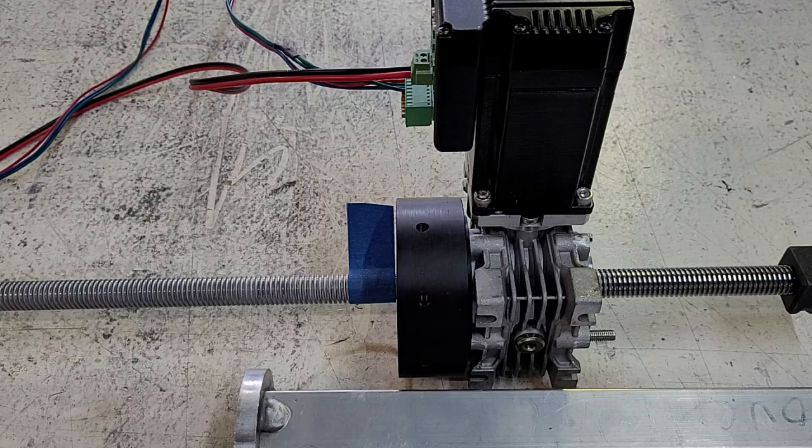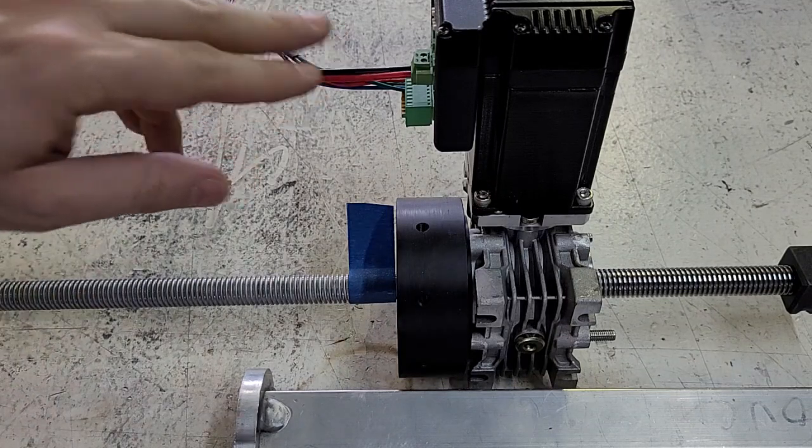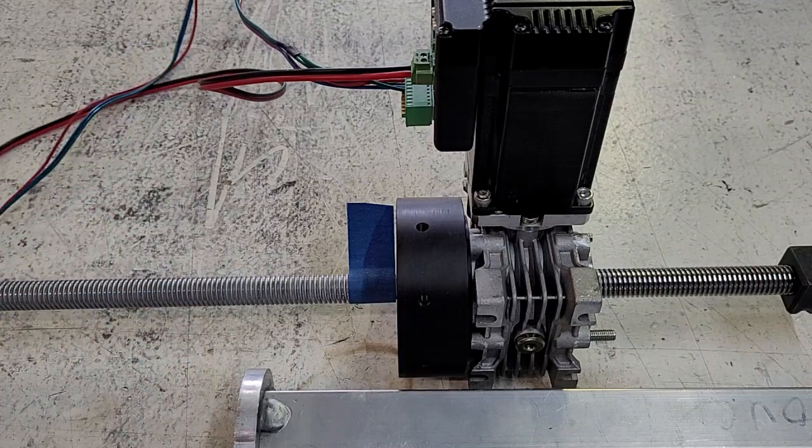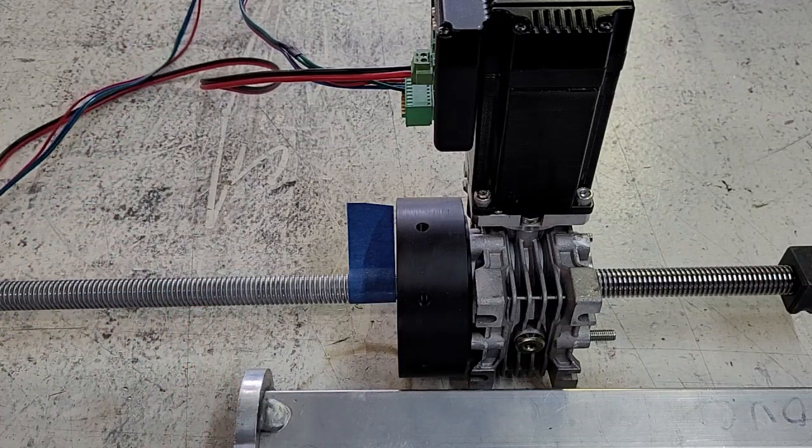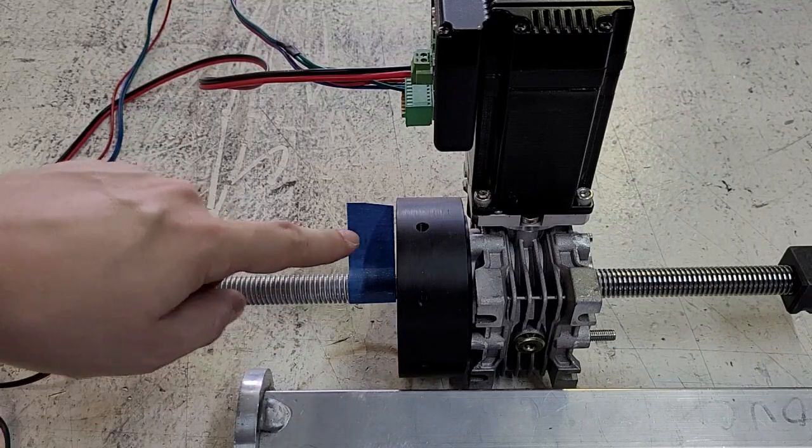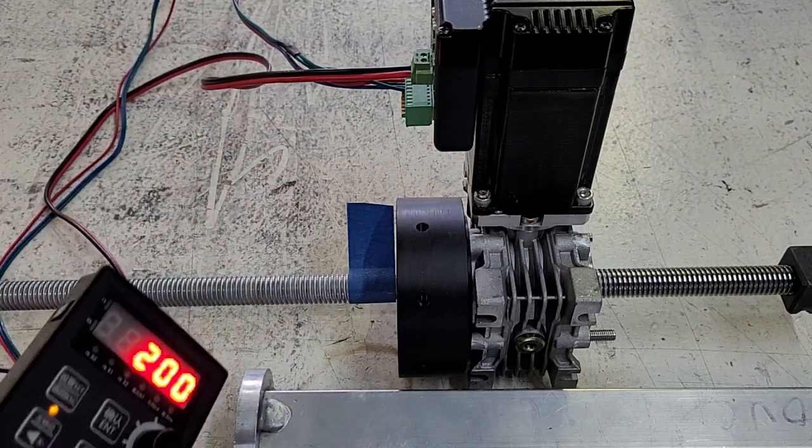So you can hook the extruder up to the printer and run the prime program, or if you have a standalone motor driver, which we're going to be using in this example, you'll be able to see the Acme screw spin. I've added a piece of tape here so we can visualize this. I'm going to go ahead and hit run.